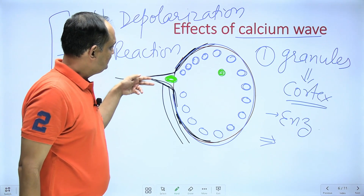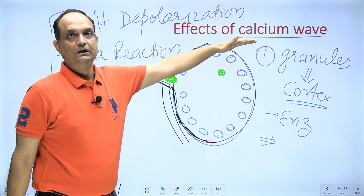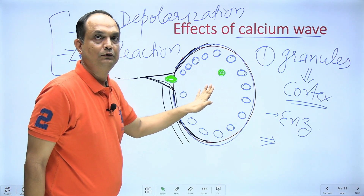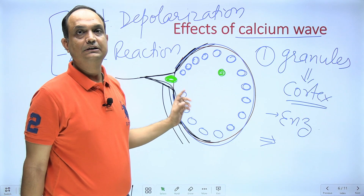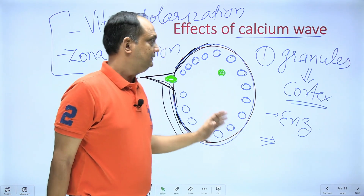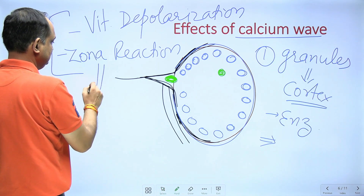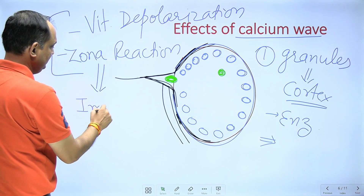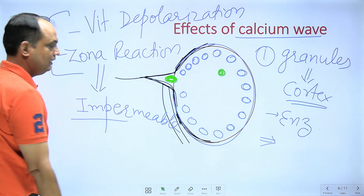So as soon as the plasma membrane of the male gamete fuses with the vitelline membrane, there is production of a calcium wave. The calcium wave shifts the cytoplasmic granules to the periphery — now known as cortical granules. These cortical granules secrete enzymes that change the property of the vitelline membrane and zona pellucida, known as vitelline depolarization and zona reaction, making them impermeable to other sperms and thus avoiding polyspermy.